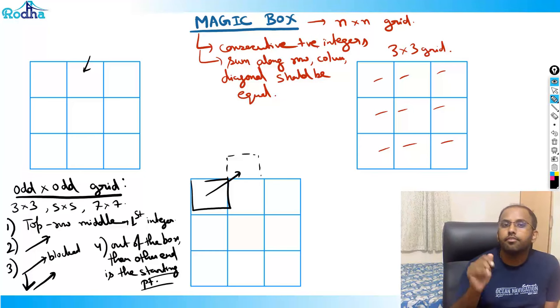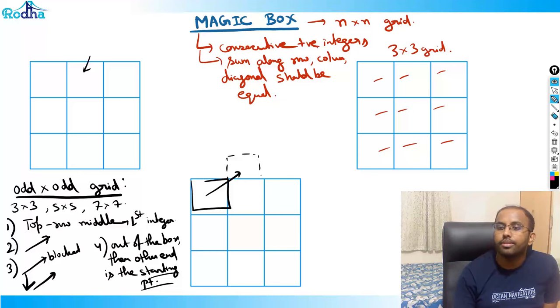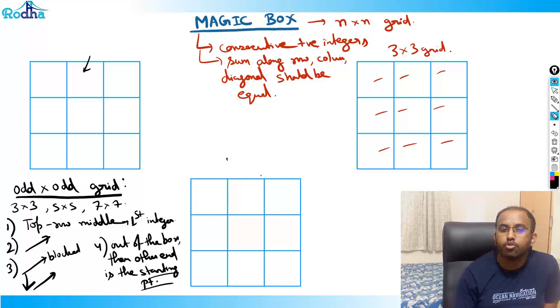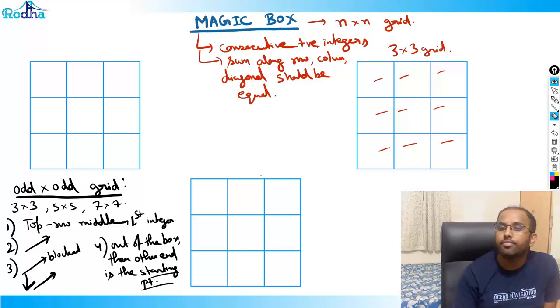Let's make a magic box with numbers 1 to 9 to understand what these rules actually mean.